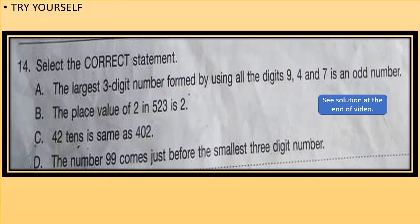Question 14: Select the correct statement. A: The largest 3-digit number formed by using all the digits 9, 4, and 7 is an odd number. B: The place value of 2 in 523 is 2. C: 42 tens is same as 402. D: The number 99 comes just before the smallest 3-digit number. Now choose which is the correct statement. You can see the solution at the end of video.